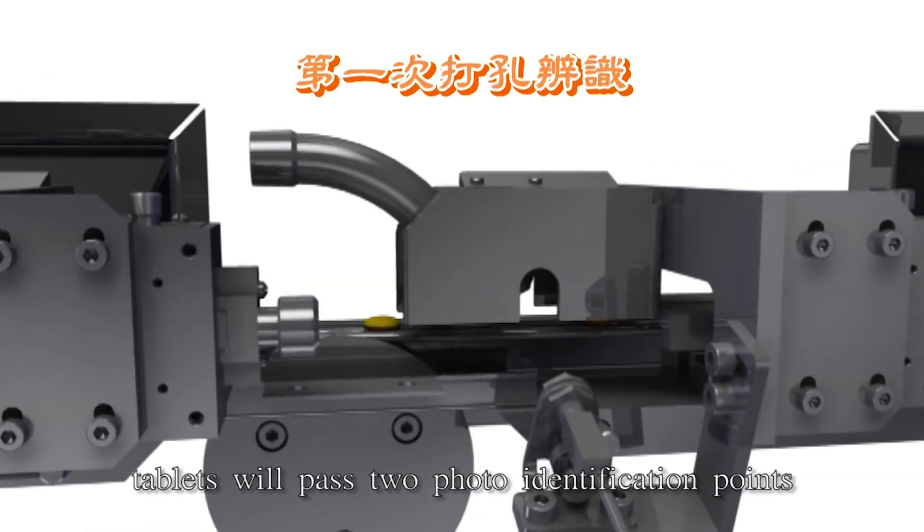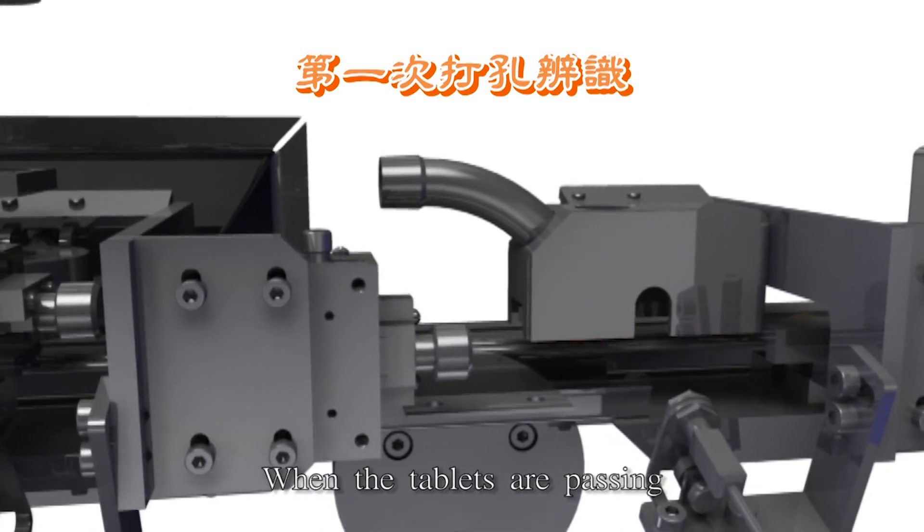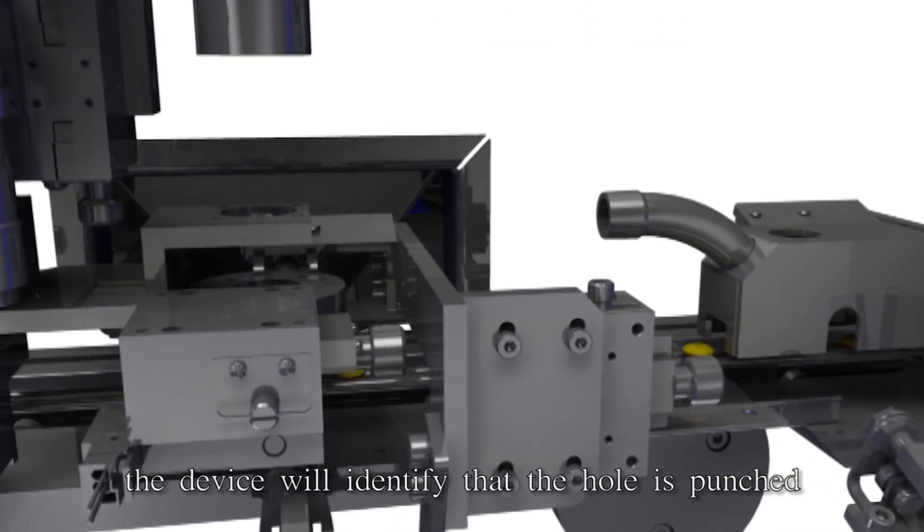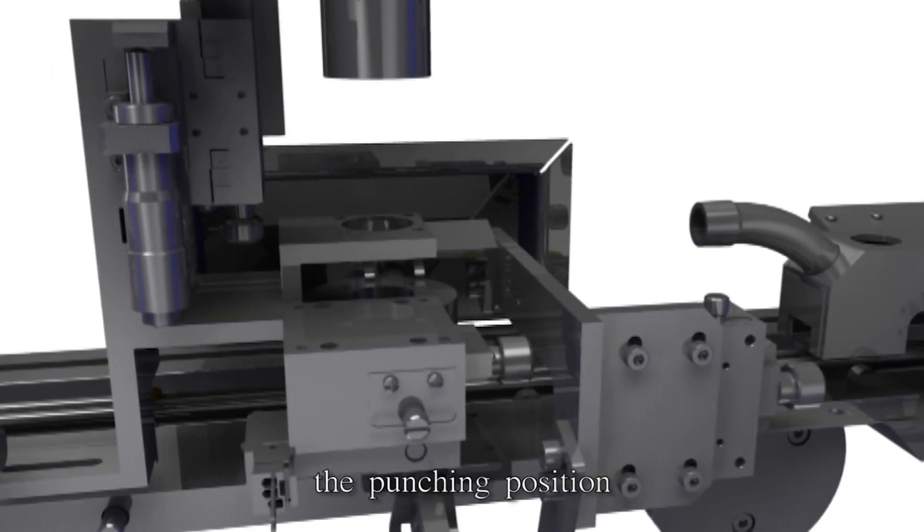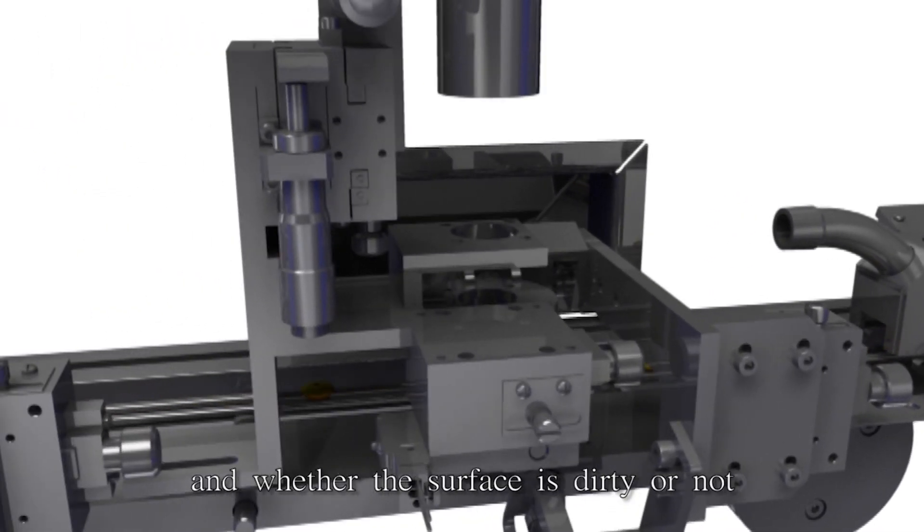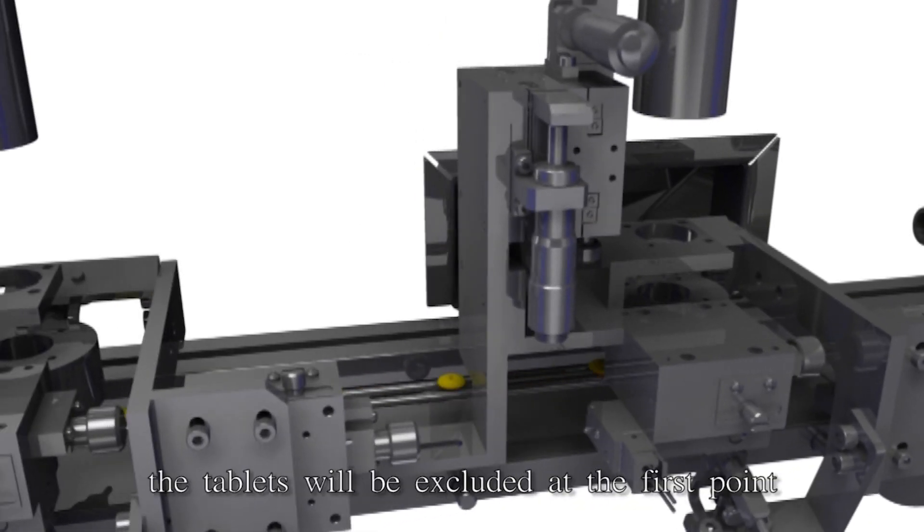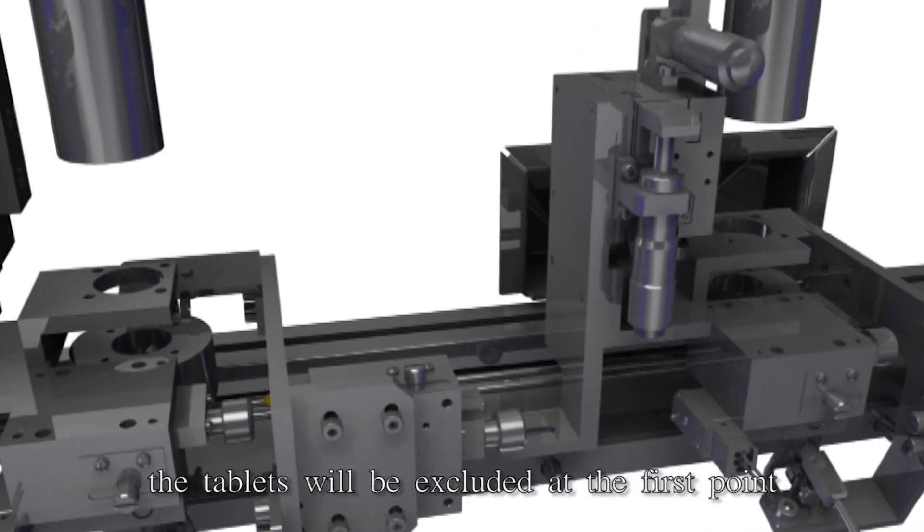Finally, tablets pass two photo identification points. When the tablets are passing the activating device, the device identifies whether the hole is punched, the hole size, the punching position, and whether the surface is dirty. If the first identification fails, the tablets are excluded at the first point.